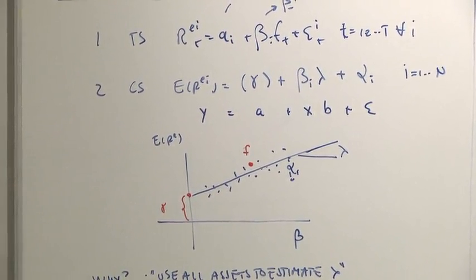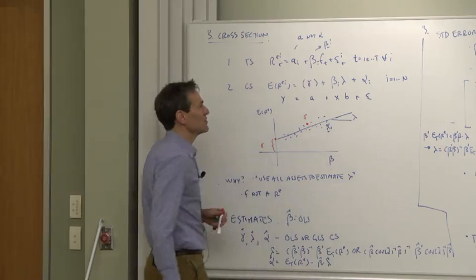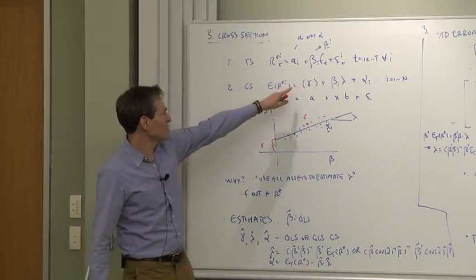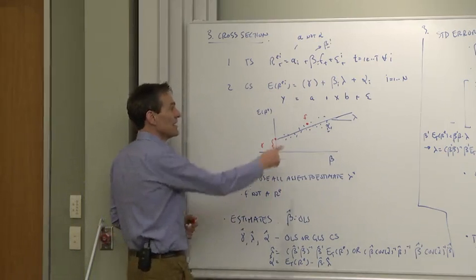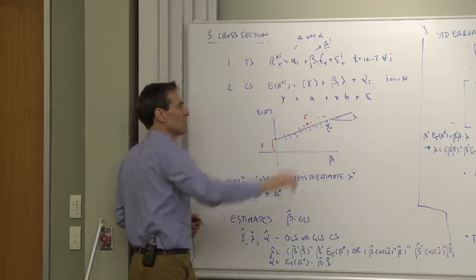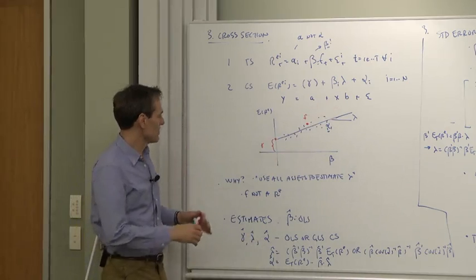The theory says the intercept should be zero. The theory says the factor risk premium should be the mean of the factors. You can impose that or not impose that, and that's why that one's in parentheses. In this case, the mean of the factor will not be the factor risk premium. We're just going to send it through the line of all the other assets and see what fits well.